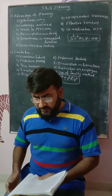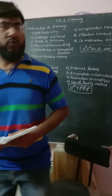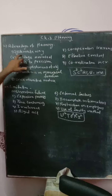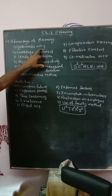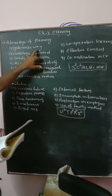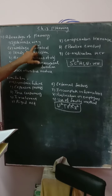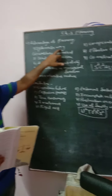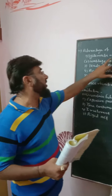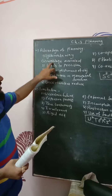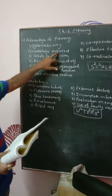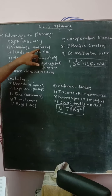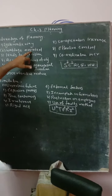First advantage: all activities are done in a systematic way — every activity proceeds in a systematic order on time. Second advantage: wastage can be avoided regarding anything — material, time, money — we can avoid that wastage.